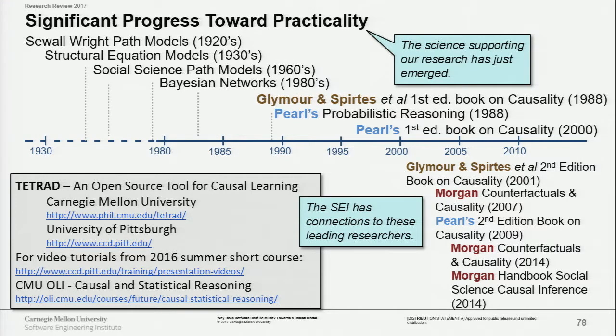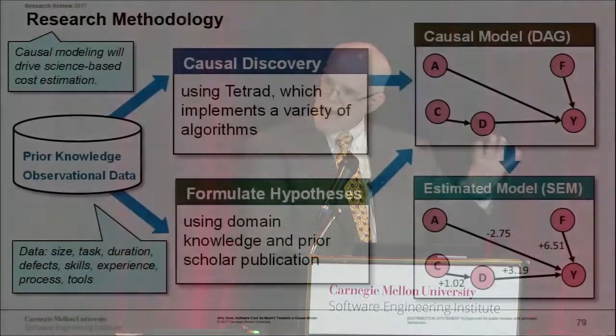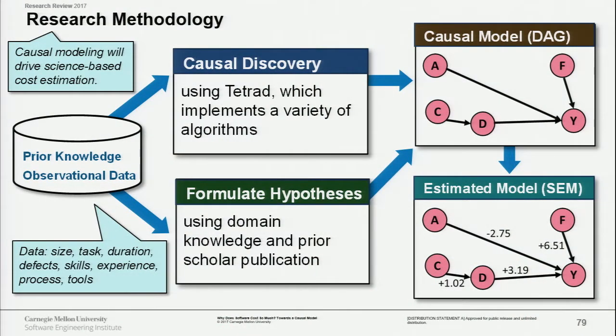NIH has funded an open-source software development effort to make these algorithms available to medical researchers, investigators of cancer, investigators of what the brain is doing — like the big brain project. What we're doing is taking those algorithms and applying them to cost estimation data. We have a two-fold methodology: one is local and tactical, and the other is global and strategic. I'll deal with the local tactical first.